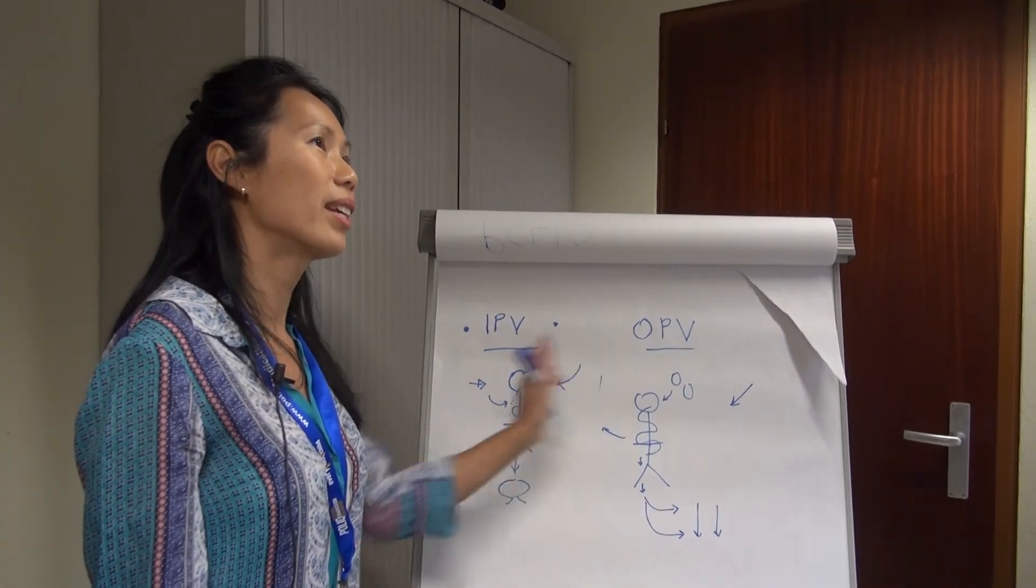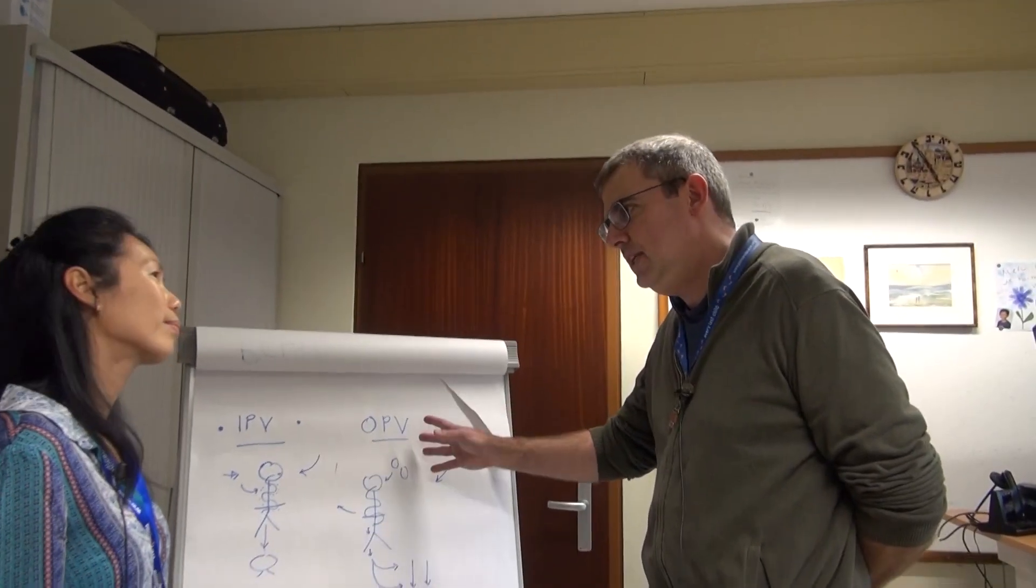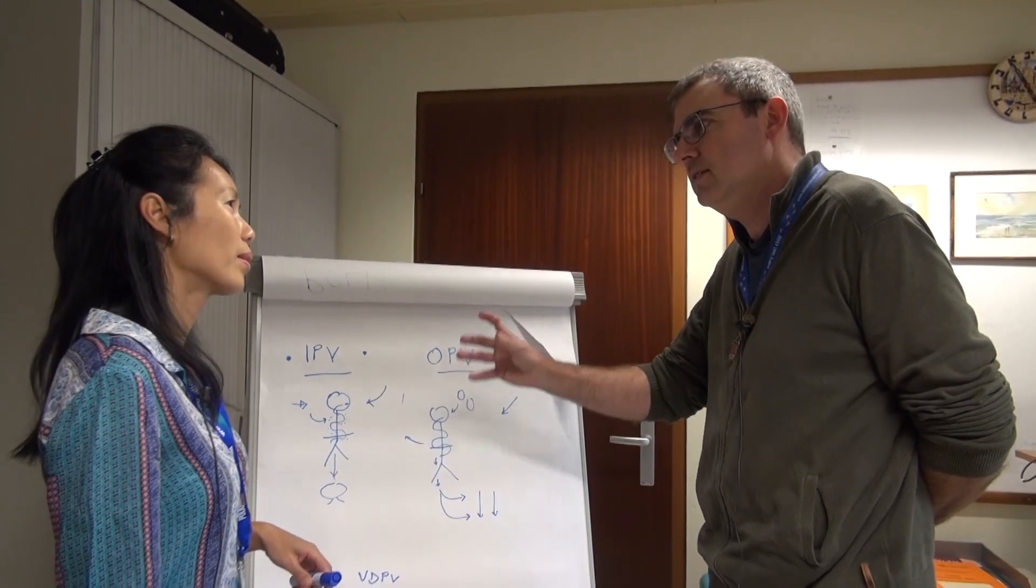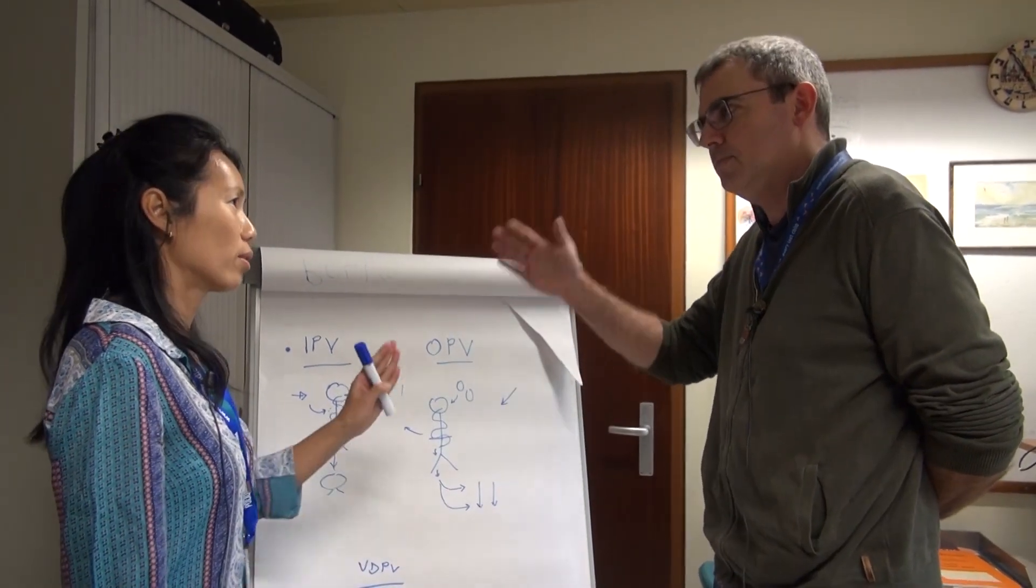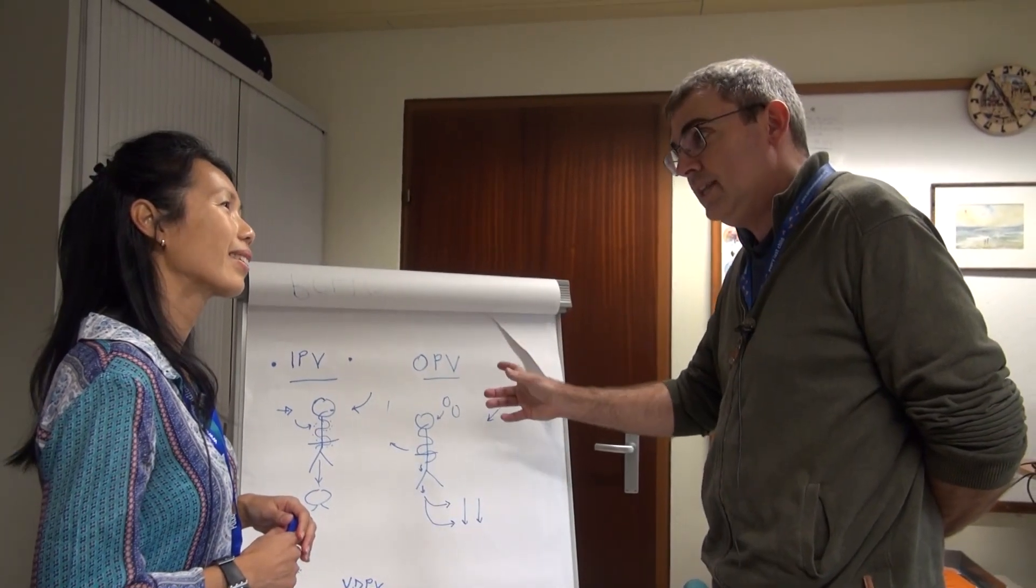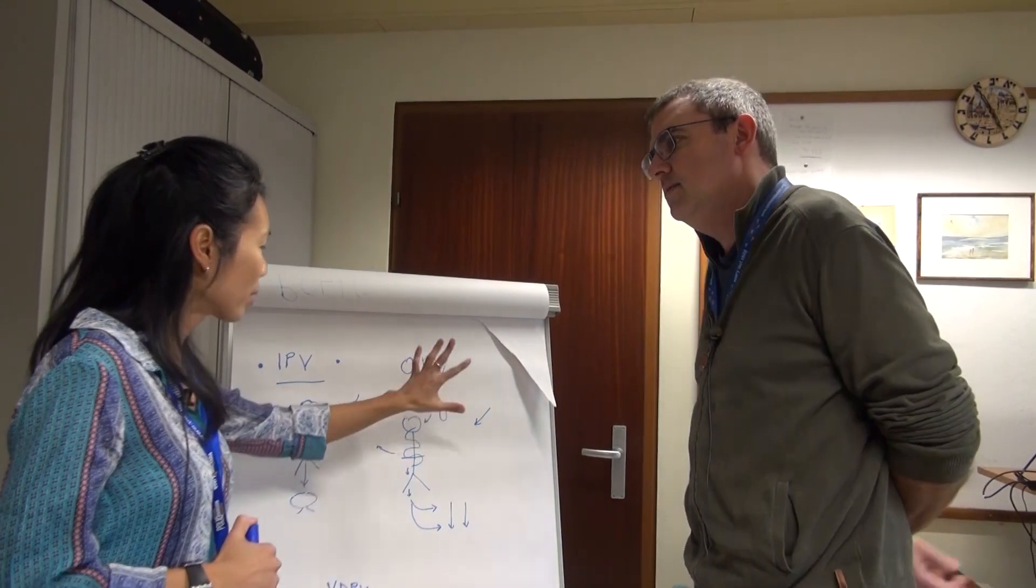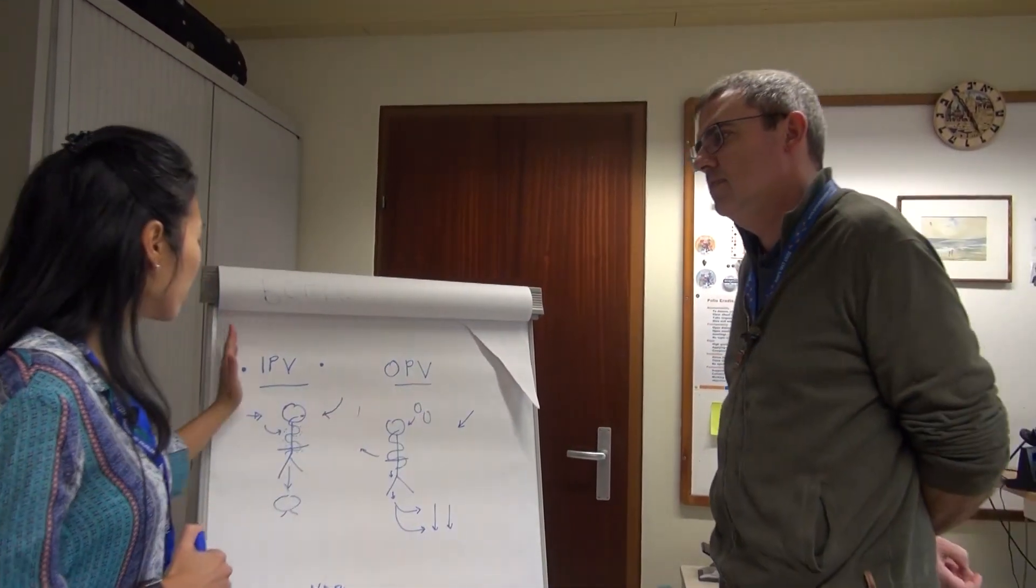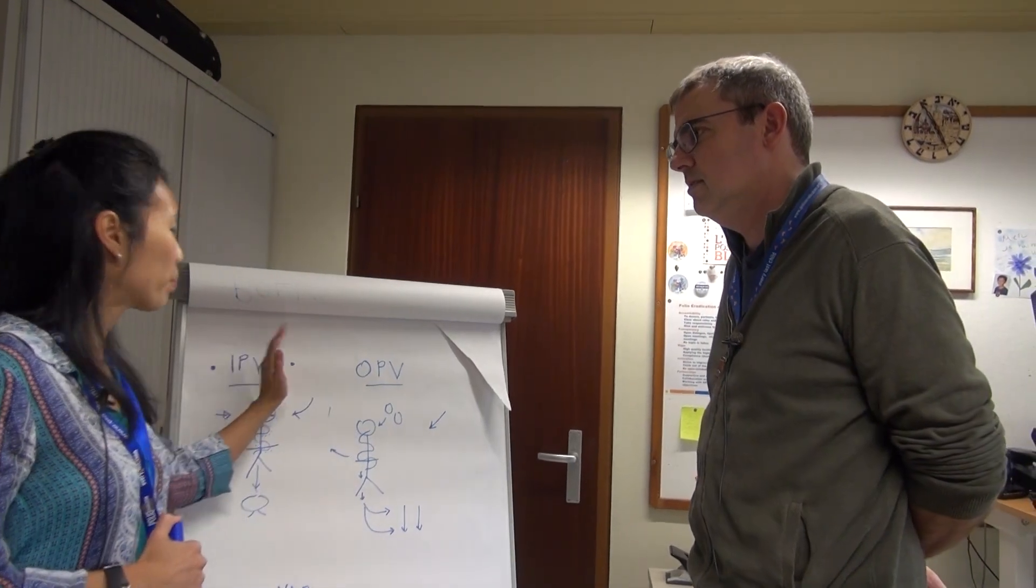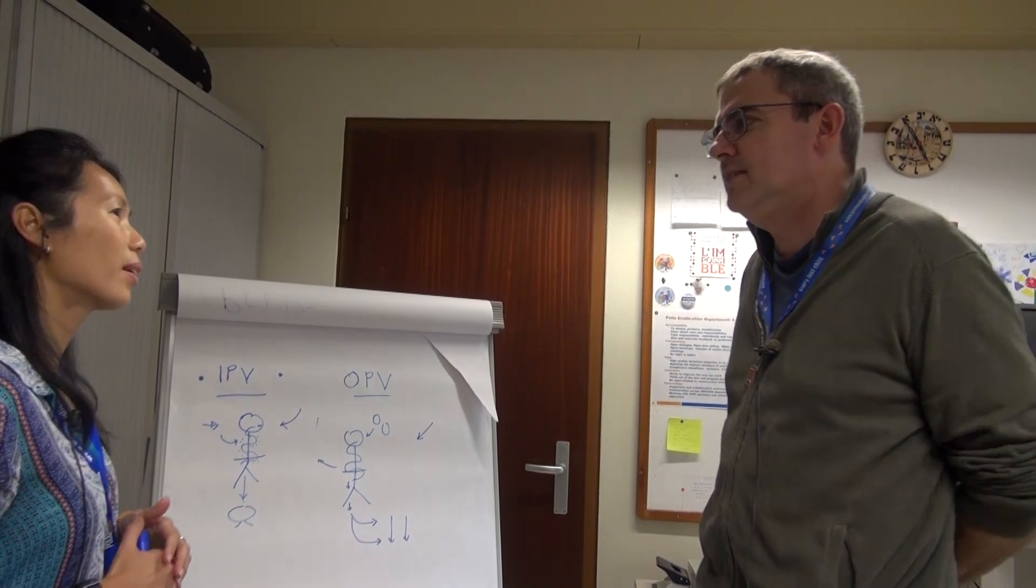But if I understand correctly, we need OPV in order to eradicate wild polio viruses because of its unique ability to stop the spread of the virus. Yes. But then after we've done that we need to stop using this vaccine. Yes. And while that's happening in that transition process we need to make sure we have enough IPV to then keep the population immunity high while we're phasing out OPV. Fascinating. It's a balance. It's a complicated but fascinating...